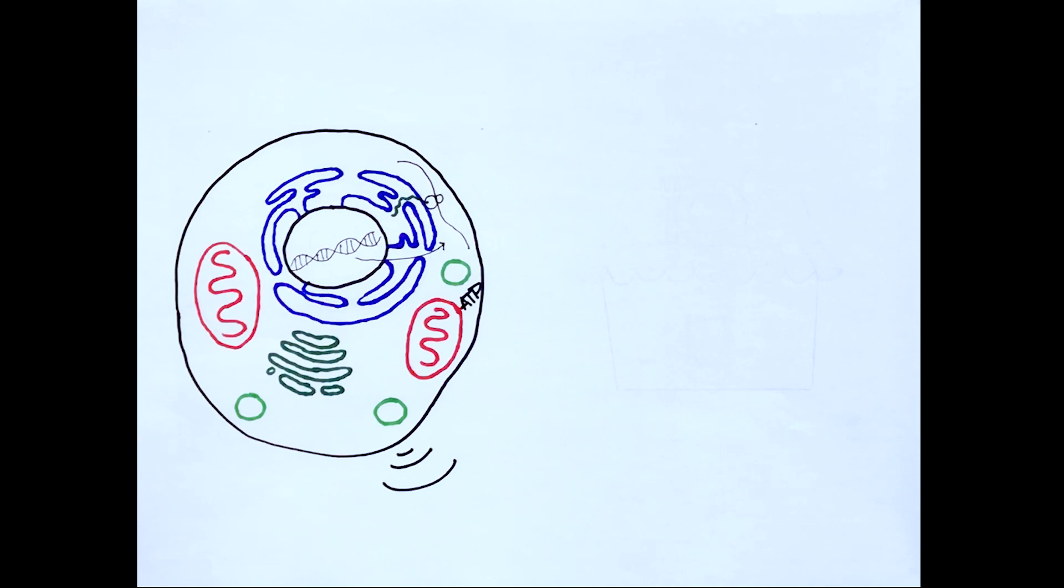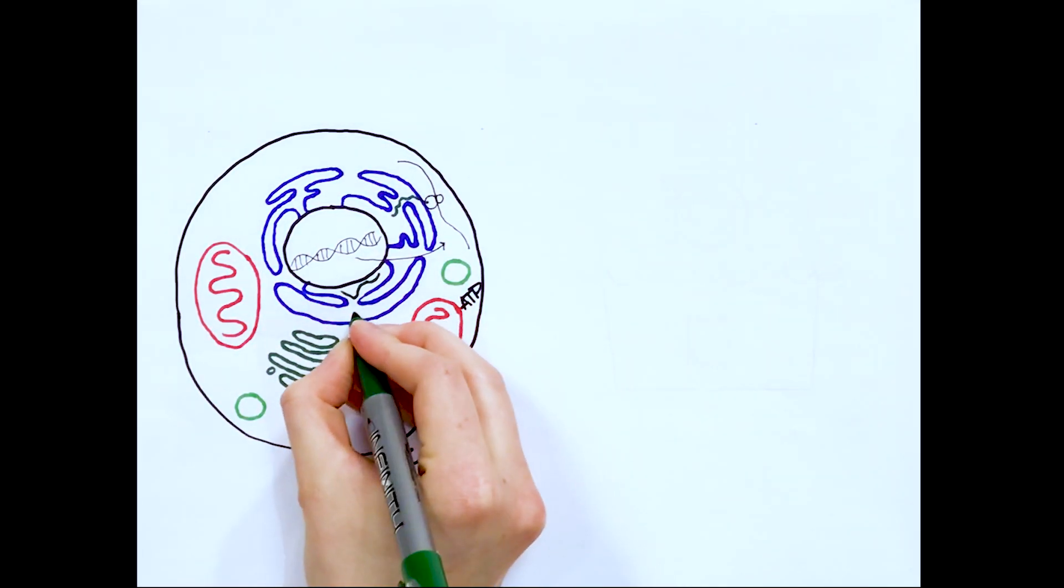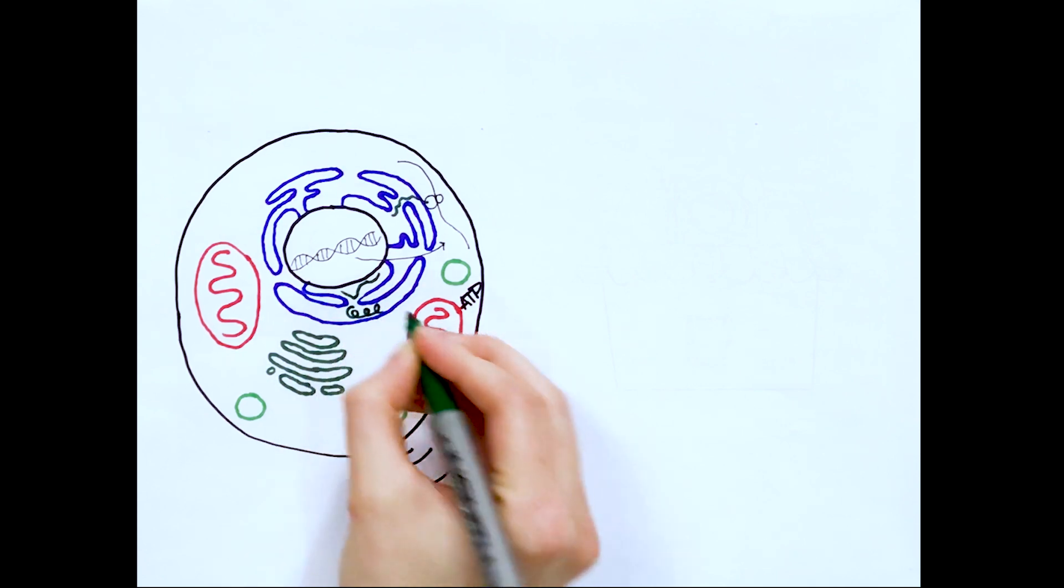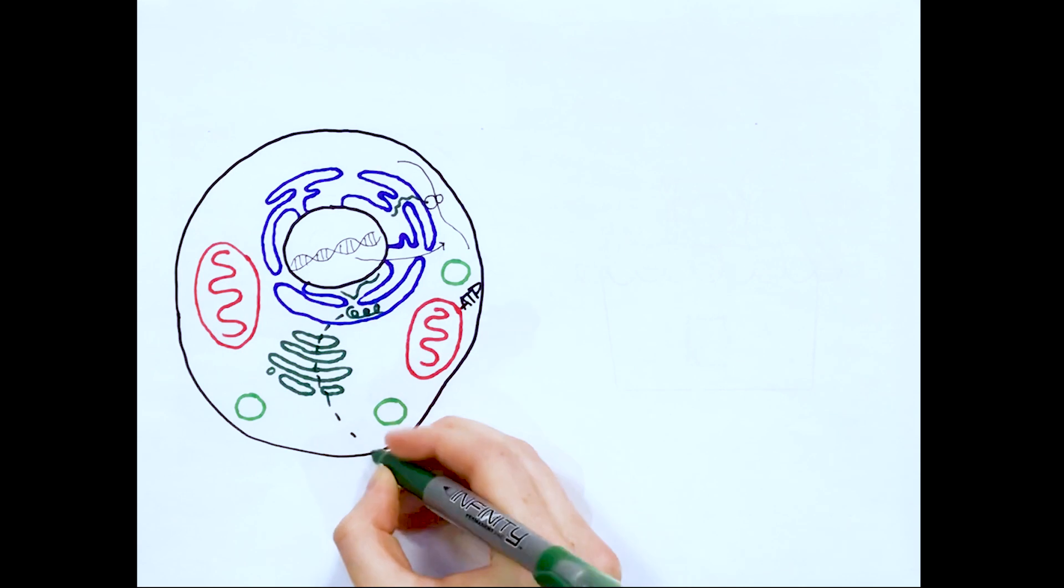Some proteins are complex and need to be made at the endoplasmic reticulum, or ER, where there are special proteins called chaperones that help fold other proteins before they are sent to their final destination.